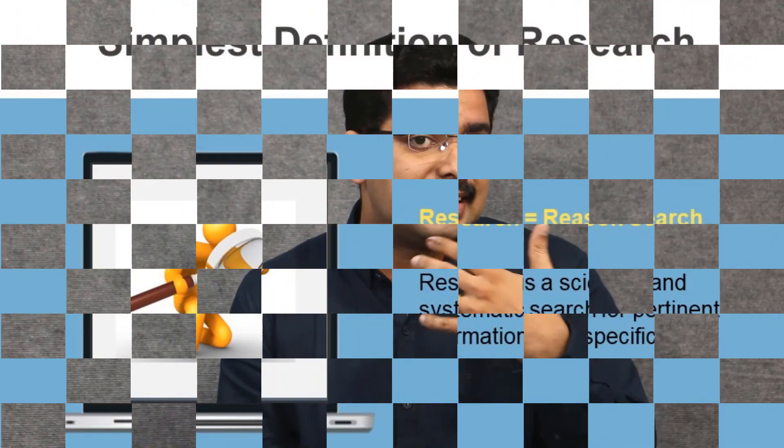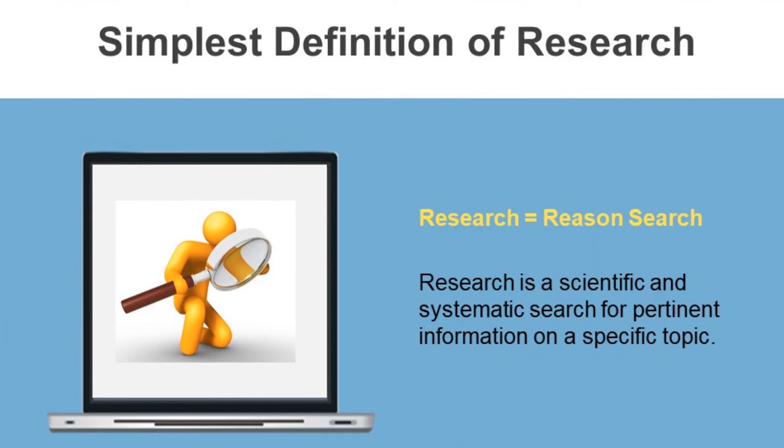I am not here to discuss vapor lock, but to make you understand what research is. Research is just like this — you try to understand the reason behind something, you try to understand why it is happening. You can really apply this search in day-to-day life. It is a scientific and systematic search for pertinent information on a specific topic. So here we come to the simplest definition: research is recent search.